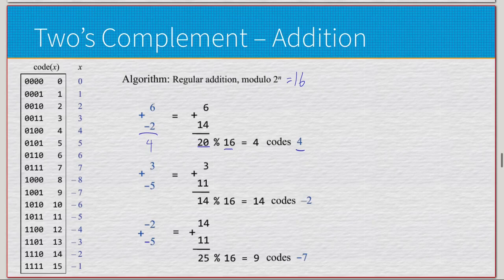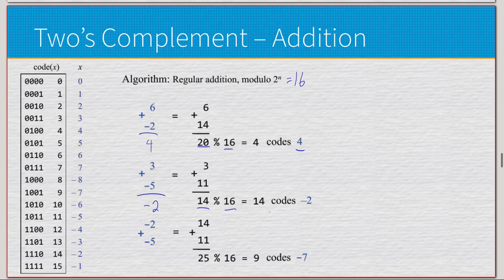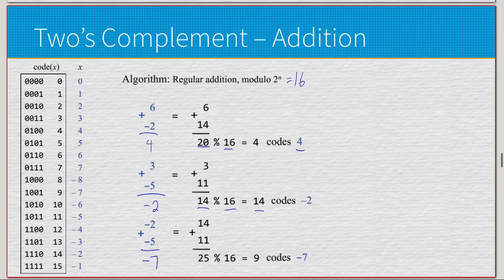Three plus negative five should give negative two. Three is positive, so it's 3. Negative five: 16 minus 5 is 11. Add them together to get 14. Modulo 16 — well, 14 is less than 16, so it stays as 14. And 16 minus 14 gives us 2, so it should be negative two. That's exactly what it is. Meanwhile negative two plus negative five should be negative seven: 16 minus 2 is 14, 16 minus 5 is 11, add those to get 25, modulo 16 gives remainder 9, and 9 codes as negative seven.